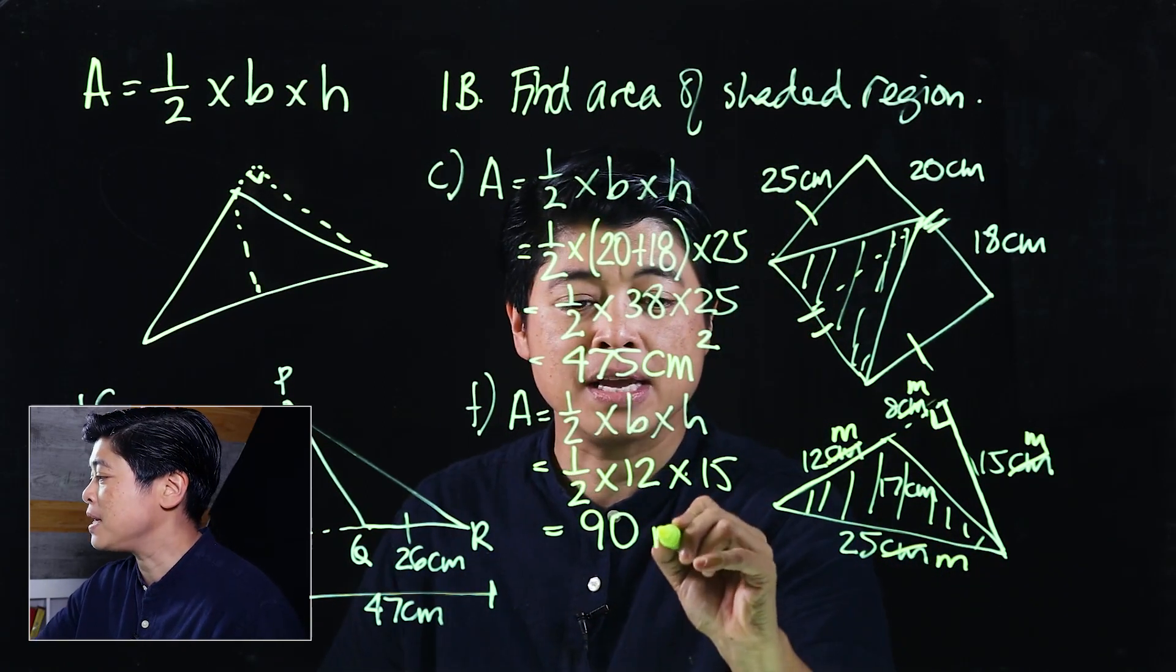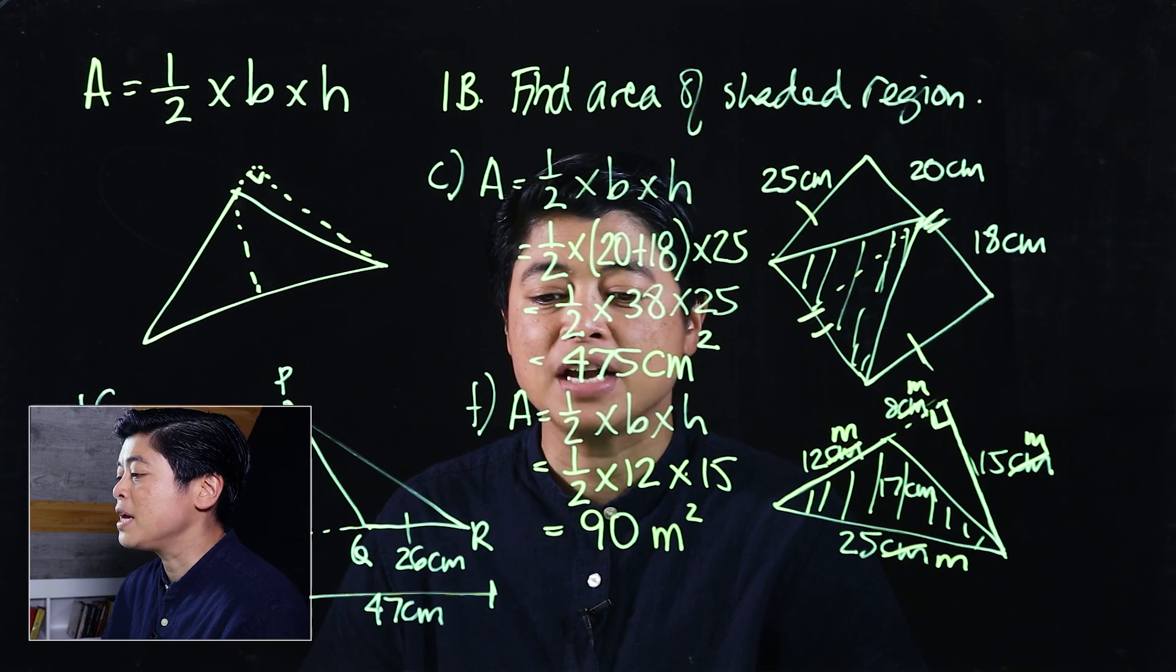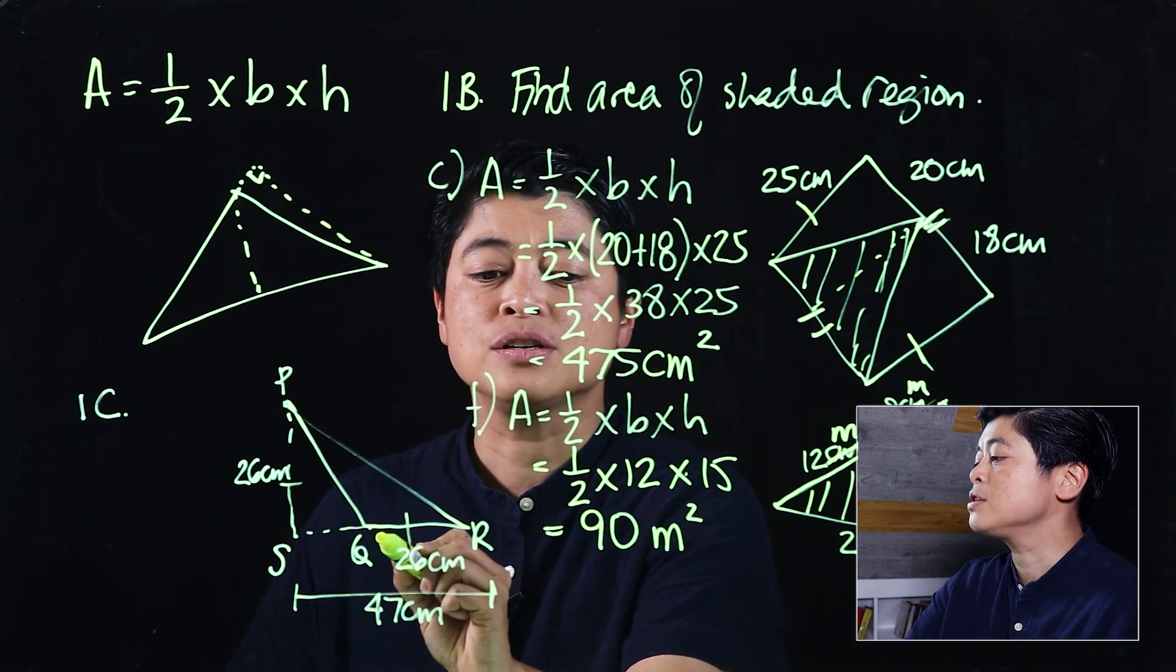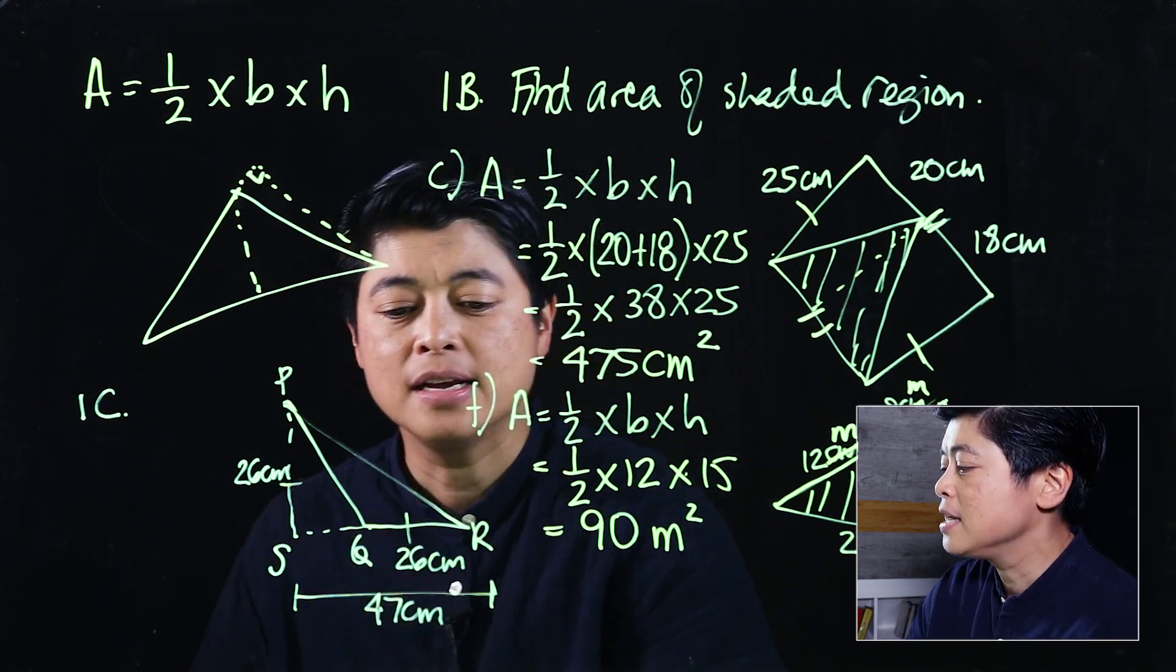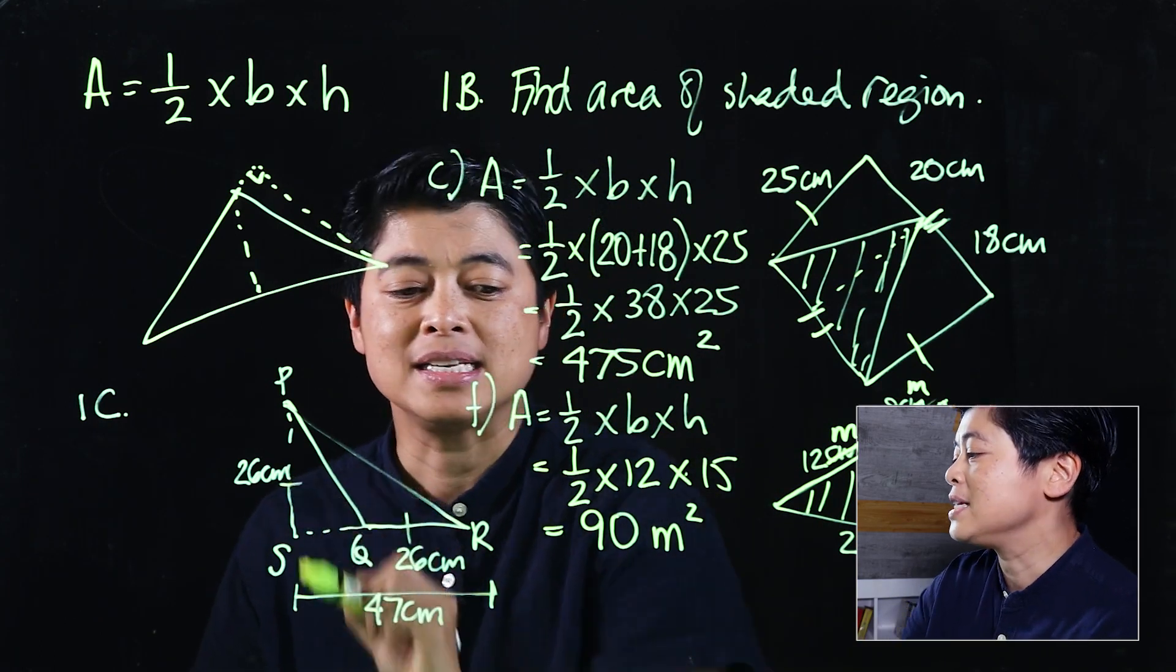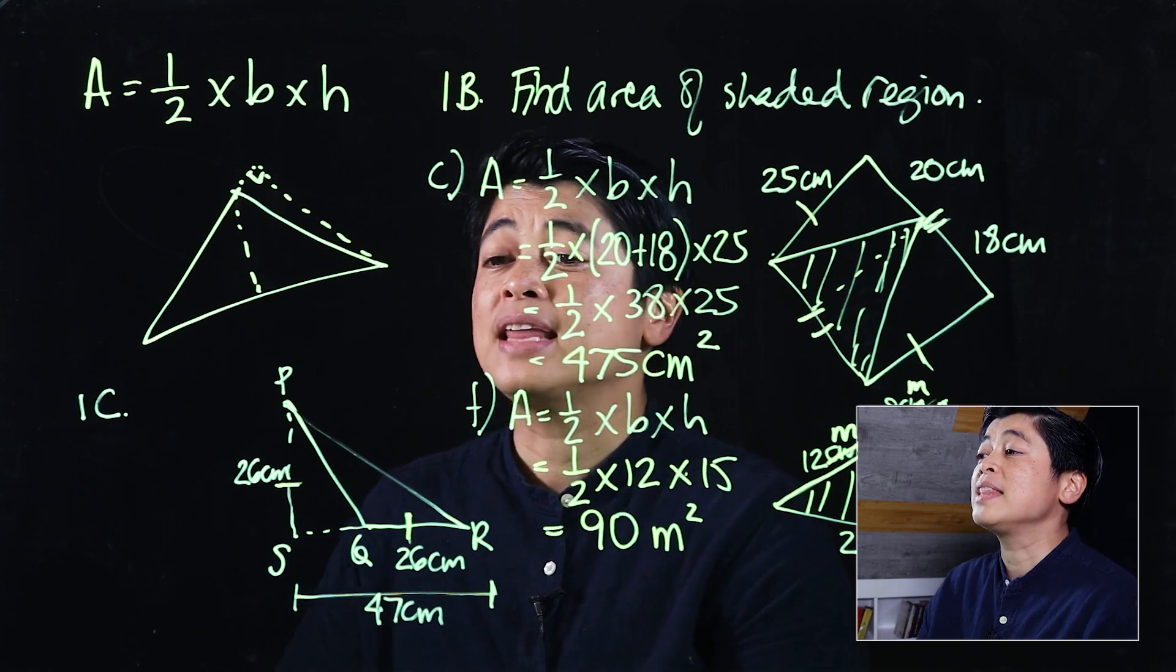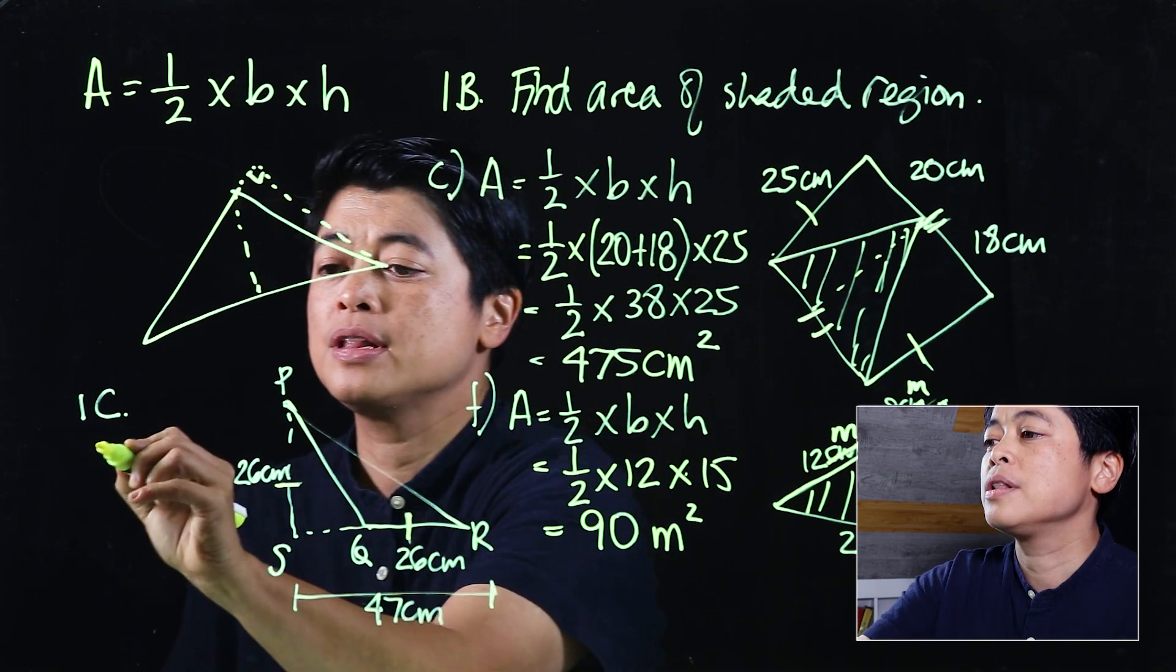If we look at the next problem on page 109, it says in the figure RQ is 26 centimeters, then it says RS is 47 centimeters, and then it says that PS is 26 centimeters, which is evidenced with the equal 26 and 26. And then it says find the area of triangle PQR.